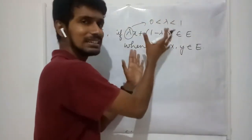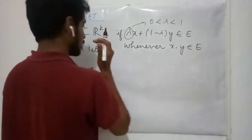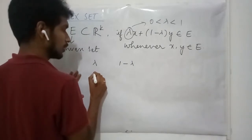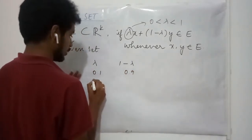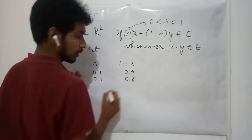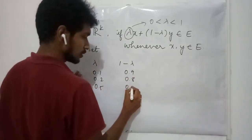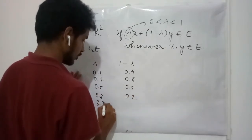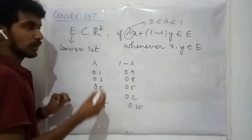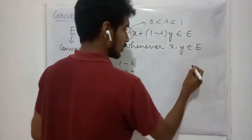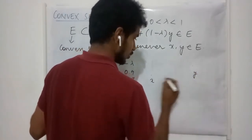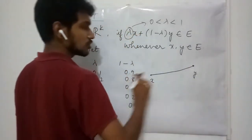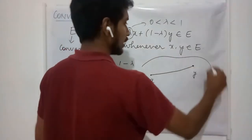What does this literally mean? If you choose lambda to be 0.1, then 1 minus lambda will be 0.9. If you choose 0.2, it is 0.8. If it is 0.5, it is 0.5. If it is 0.8, it is 0.2. This means if this is your x and this is your y, the line joining these two points must entirely lie in E.